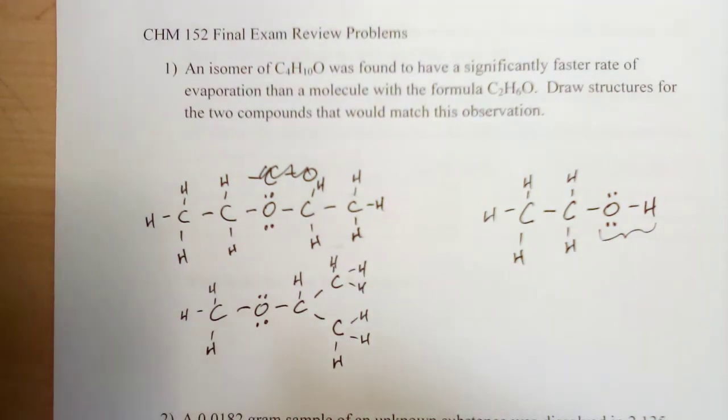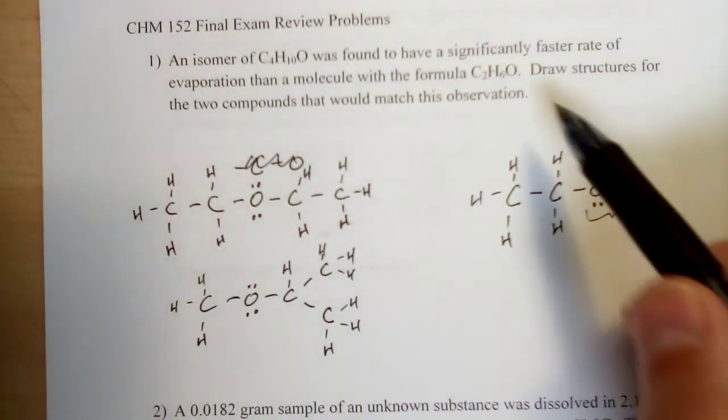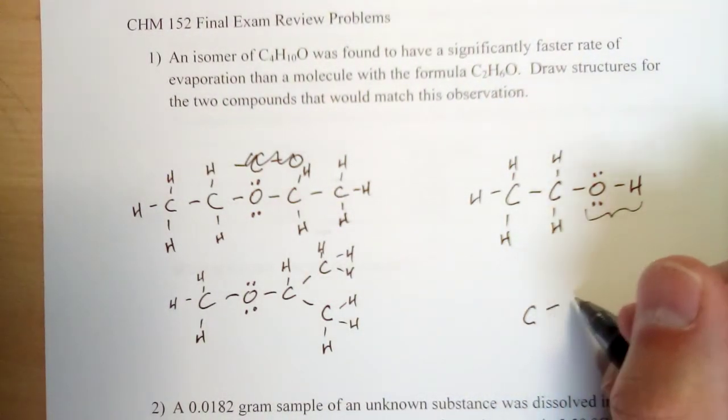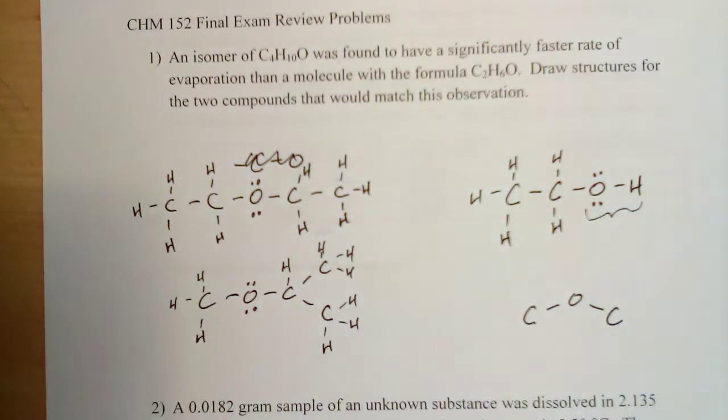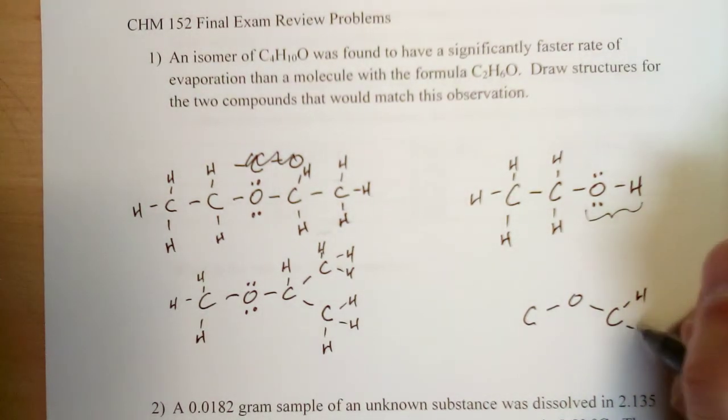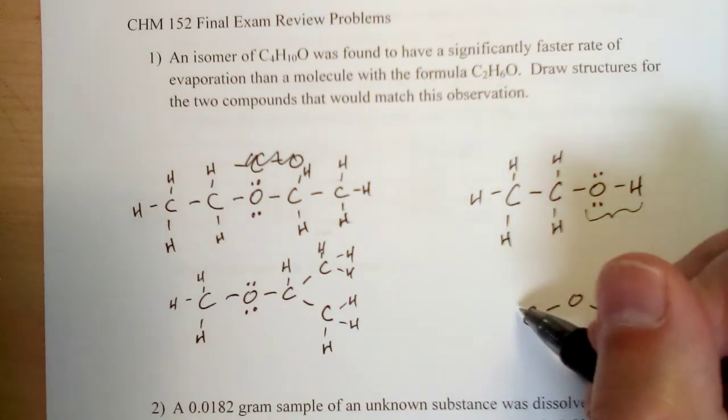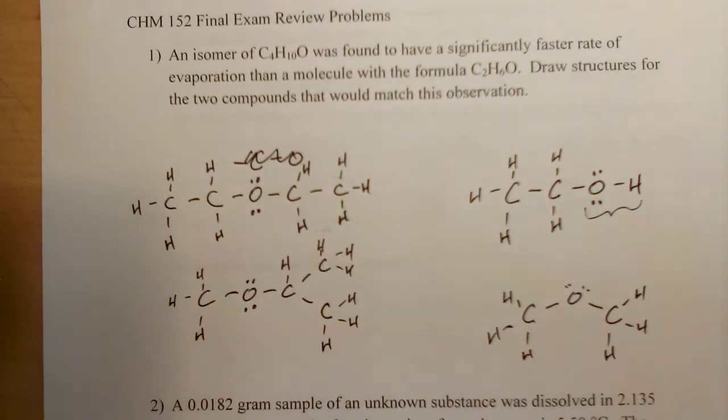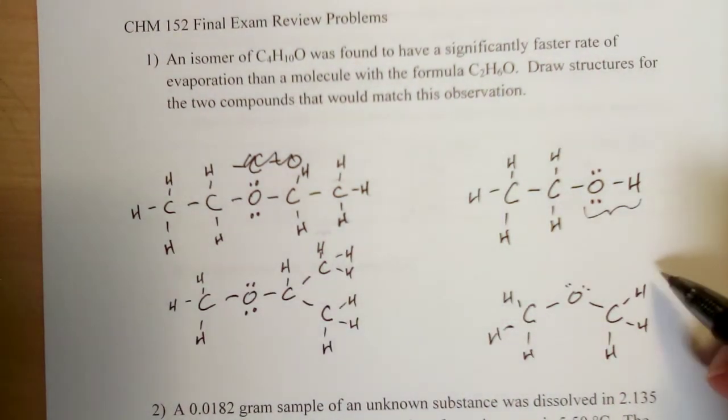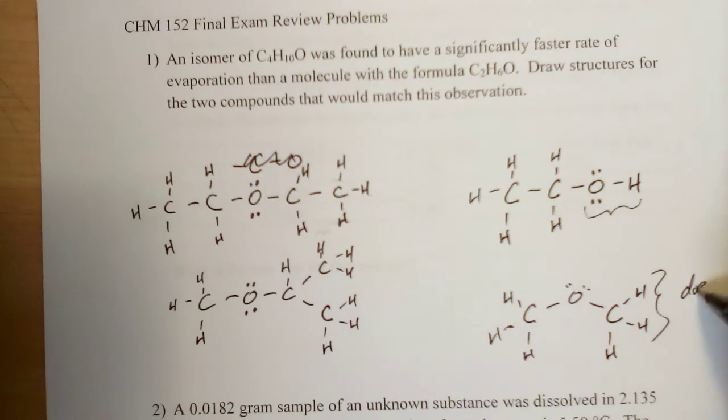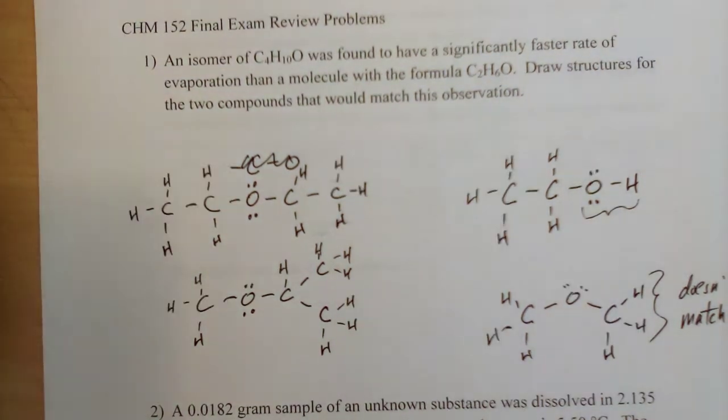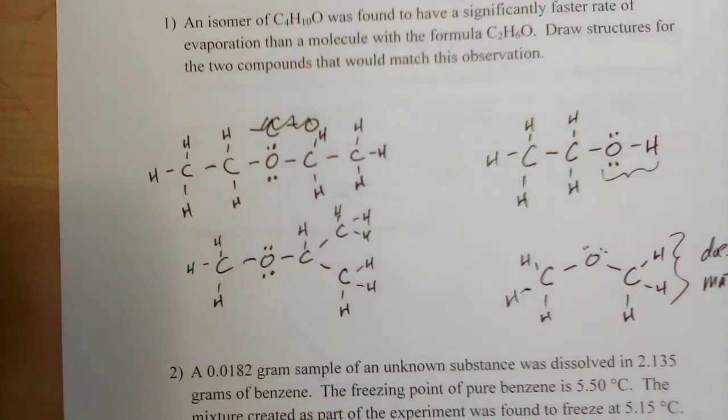Now there's several other isomers you can draw for C4H10O. For C2H6O, the only other isomer you can draw would have the oxygen in the center between the two carbons. And that doesn't match what we're seeing here—that's a fairly small molecule, but it has no hydrogen bonding and it is polar. So this just doesn't match. That would not match what we are describing here in this particular problem, but that's a structure you probably should be able to draw if you were asked to for that particular molecular formula.